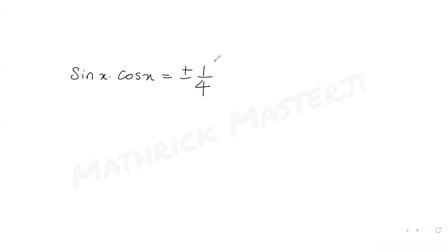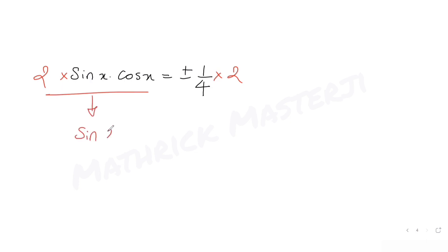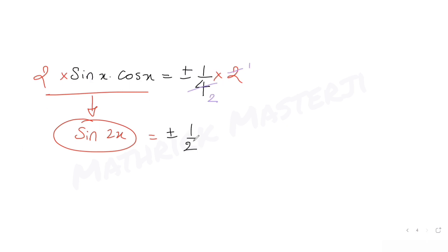Multiplying both sides by 2, we convert the left side into the form 2 sin x cos x, which is the expansion of sin 2x. Cancelling the twos on the right, we get sin 2x = ±1/2.